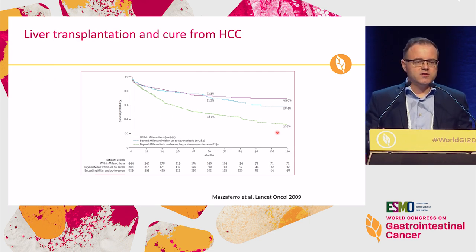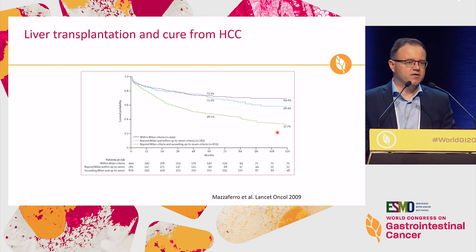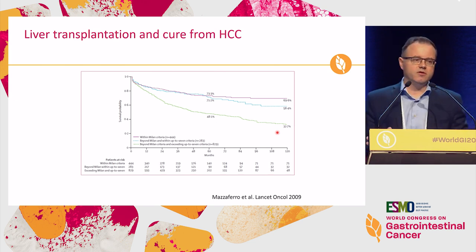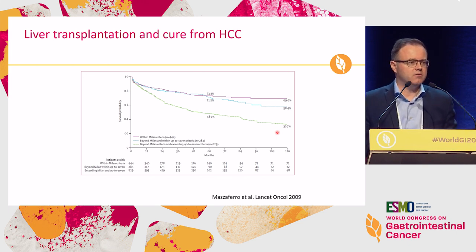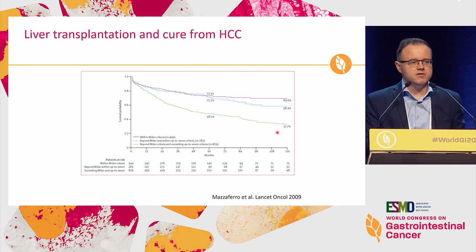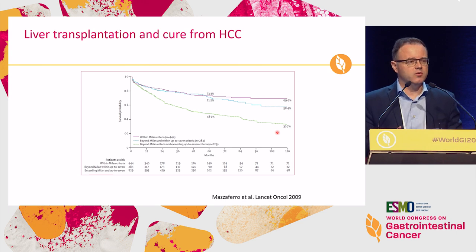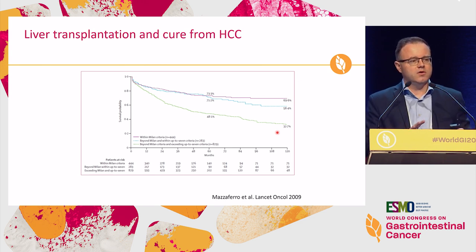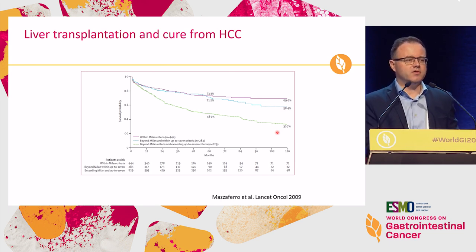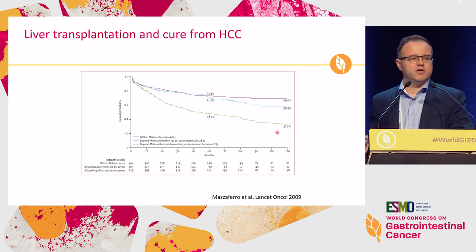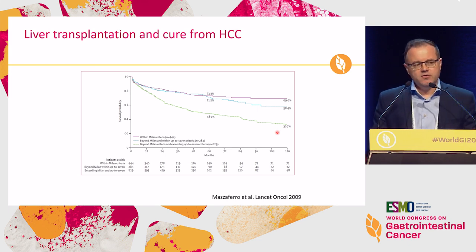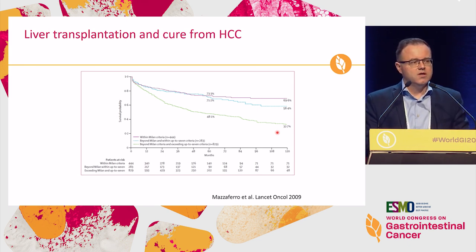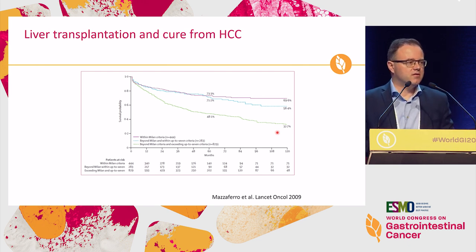In HCC, discussions always start with: is this a potential candidate for a liver transplant — no, or perhaps in the future? This determines the decision-making. The availability of organs and how your country is organized legally will determine the sequence you will pass through. In Switzerland, it's more difficult to get a liver; there are more age limits than in Belgium. Transplant comes into play, but of course there are some criteria that we follow.